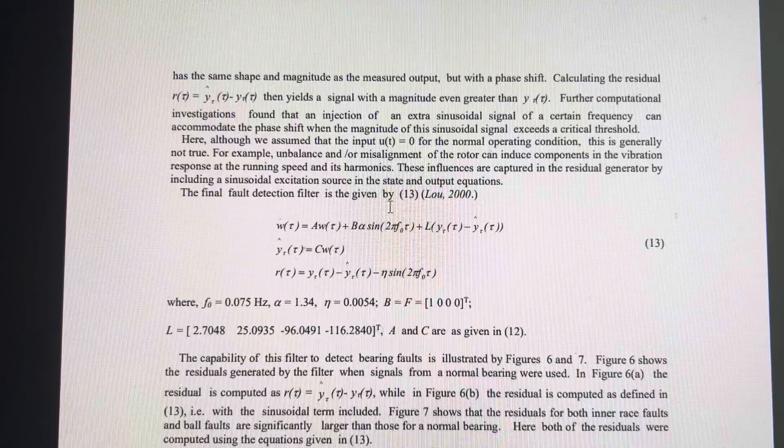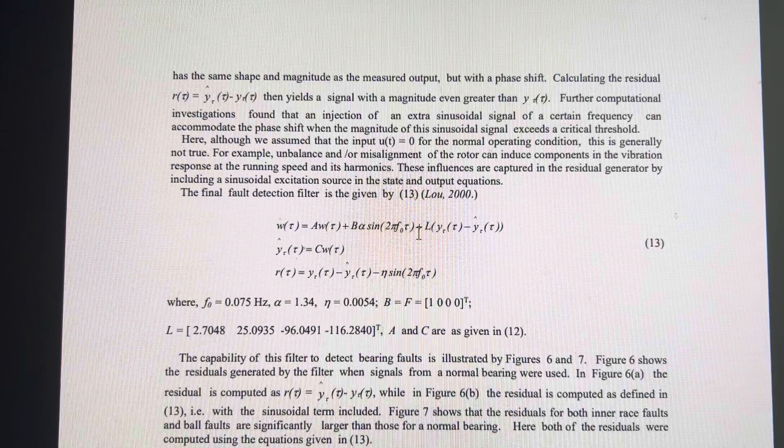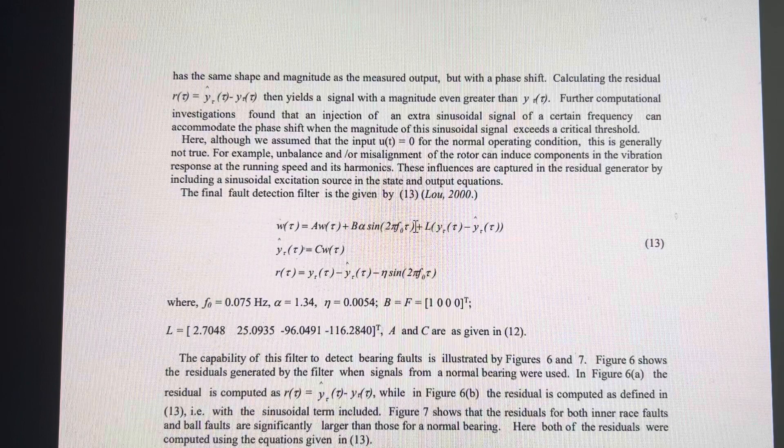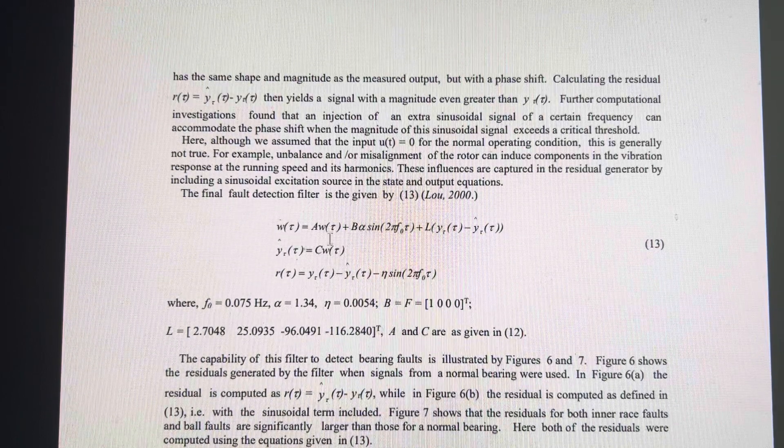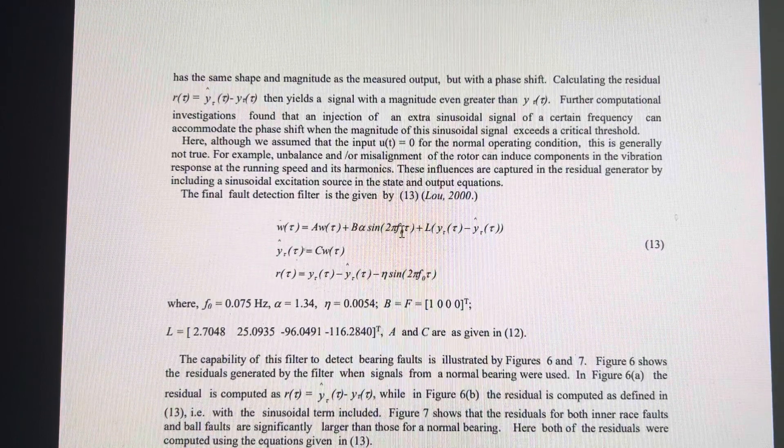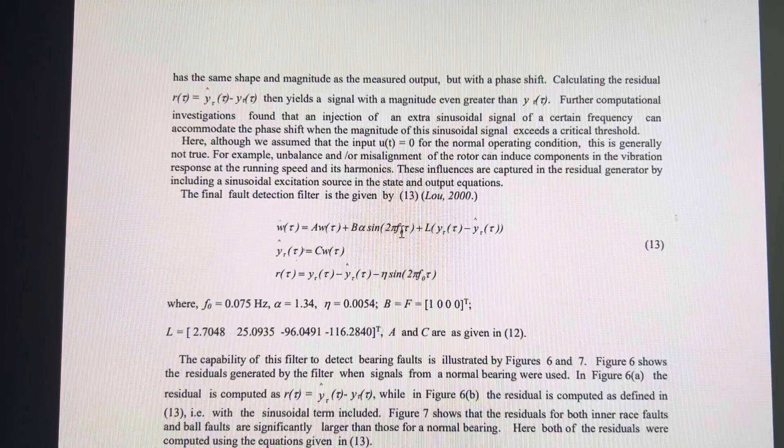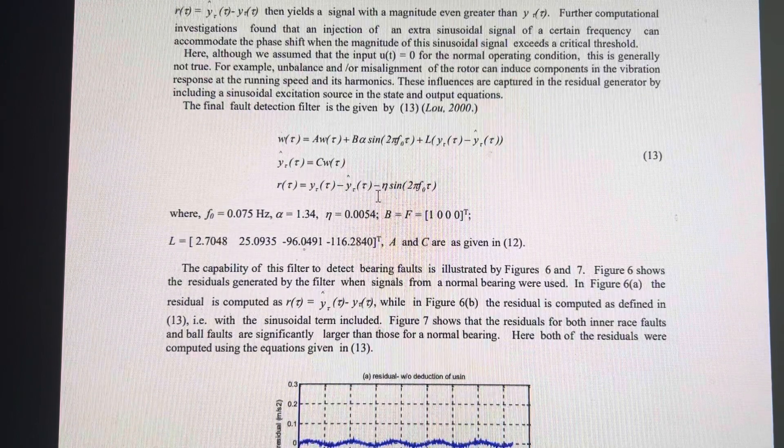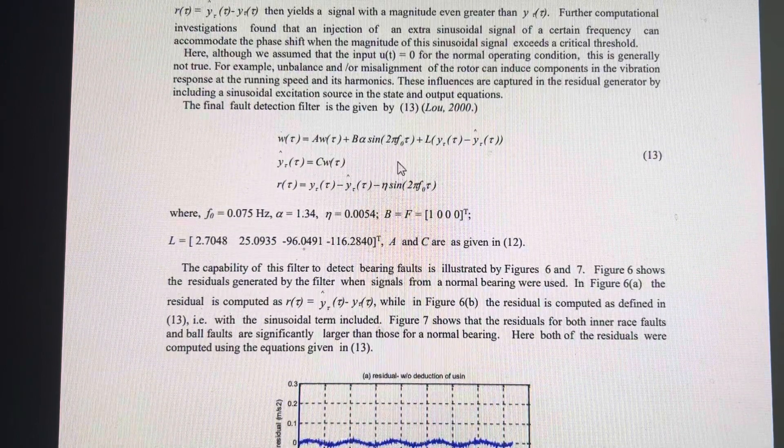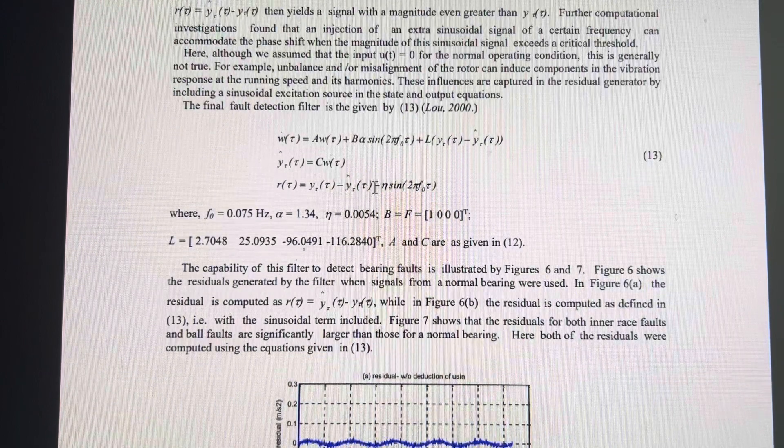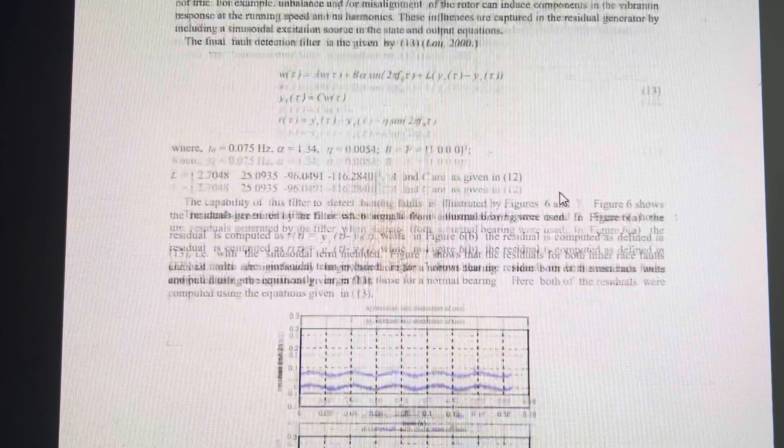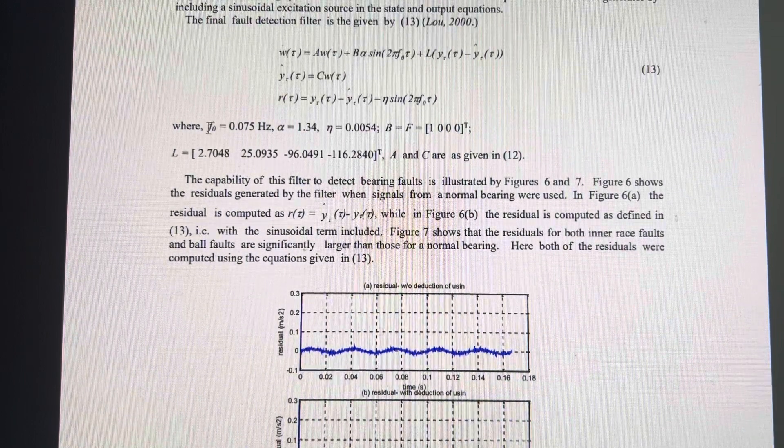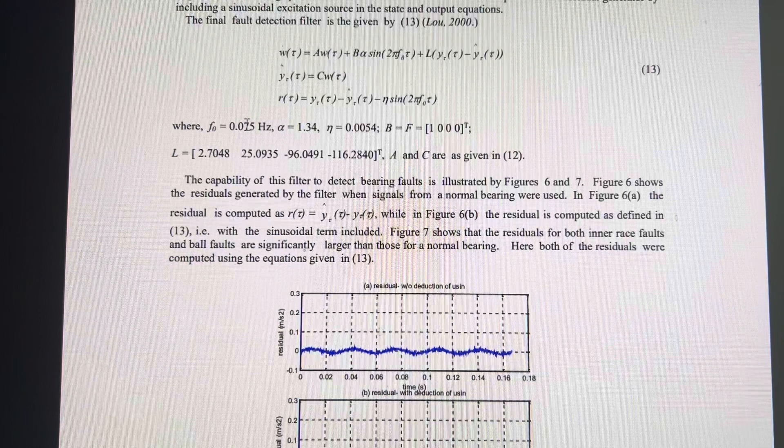Since we consider the phase information was not considered in modeling, we add a sine signal with certain frequencies to approximate. Also when we generate the residual, we use the same sine signal but with a gain. Here we can use the frequency of 0.075 hertz.